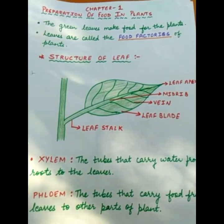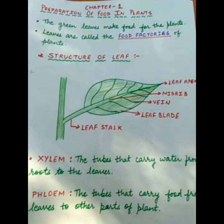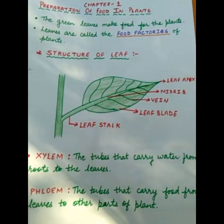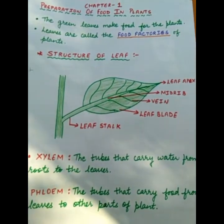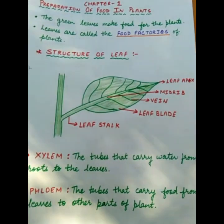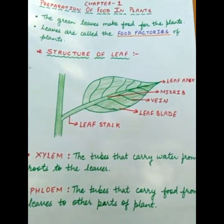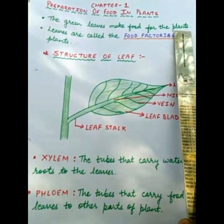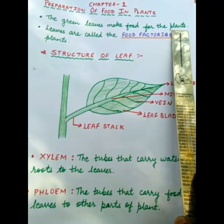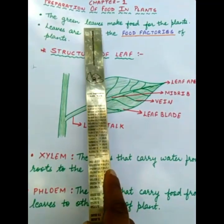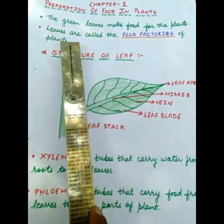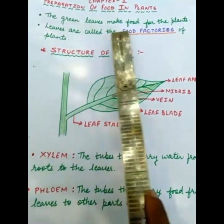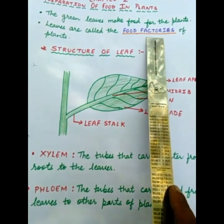So now you know that plants make food for all of us — animals and humans get food from plants. But have you ever thought about where the food is made in plants, and who makes food in plants? The green leaves make food for plants. The leaves are where the plants make food. Leaves are called the food factories of plants, because the food is made in the leaves.